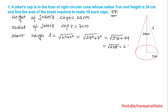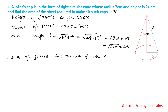That is 25. So, lateral surface area of the joker's cap equals lateral surface area of the cone, which is pi r l. So, pi means 22/7, R value is 7 cm, and L value already found is 25. The 7 cancels, giving 22 × 25 = 550 cm².